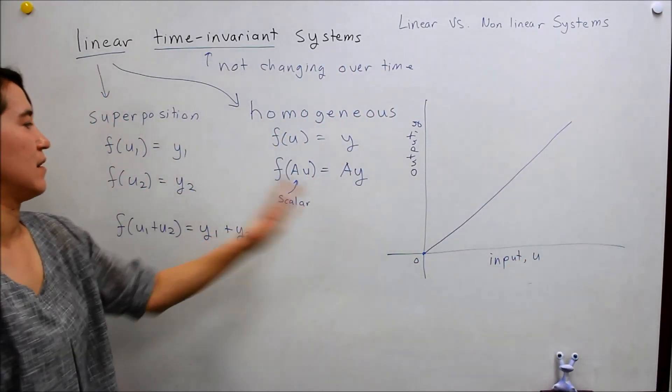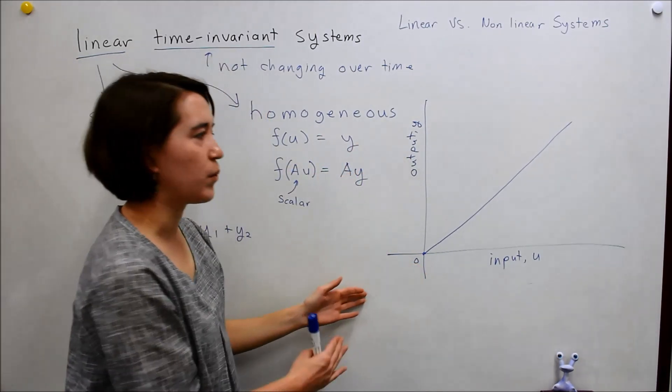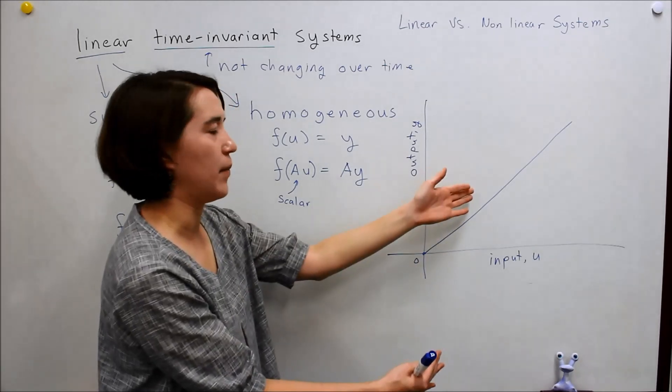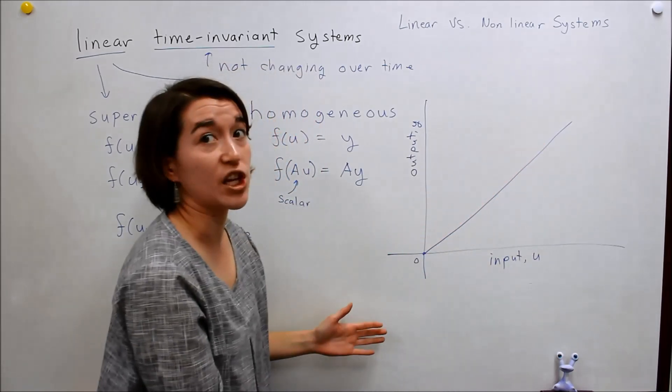A linear system essentially looks like this. If you break this down, you'll see that this system will follow these two rules. And with all of our examples, we put in a certain input, we get a certain output back, and then we change it by a certain amount. Everything is linear.